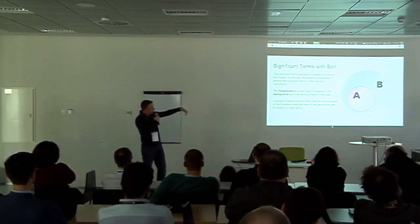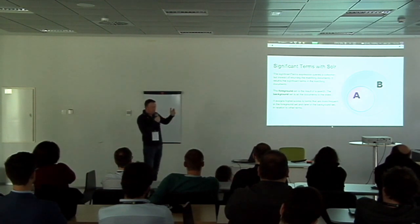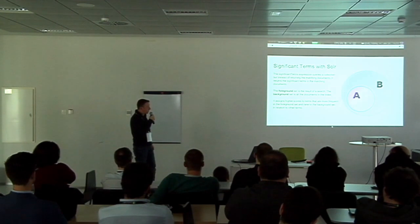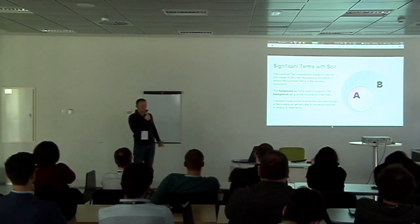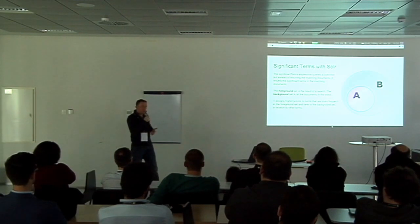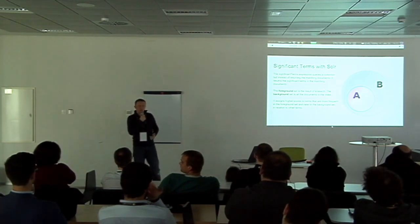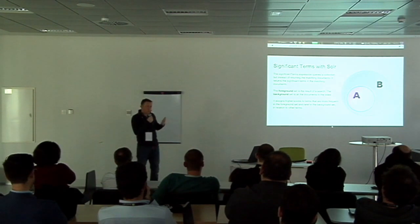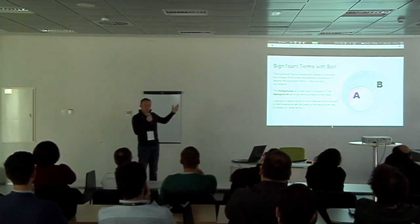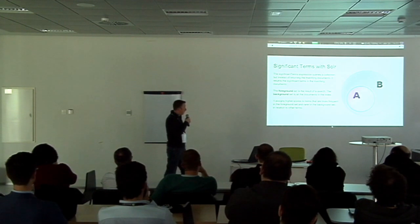In this diagram, you specify your search criteria, and the results of that search criteria will be foreground set A. Then you compare them to the whole background index. What this does is assign a higher score to terms that are more frequent in the foreground and rarer in the background. To give you an example — the idea behind this could be something like fraud detection. You've got a bunch of insurance claims, and somebody's identified a subset they think is a bit strange. They want to know: is there anything significant about those claims? You could discover that for those insurance claims, there's a doctor that appears more frequently than normal — and that would be fraud detection based on significant terms.